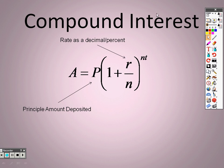n stands for the number of times it's compounded each year. So if I said to you quarterly, that means it's compounded 4 times a year. If I said annually, that means it's compounded once a year. If I said monthly, that means it's compounded 12 times a year.